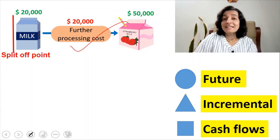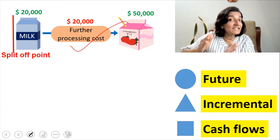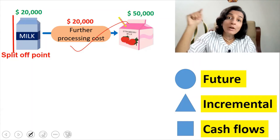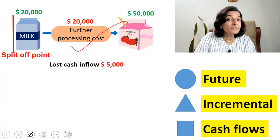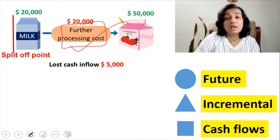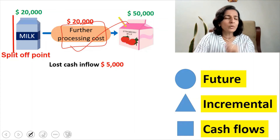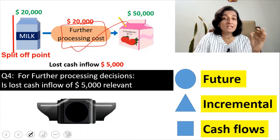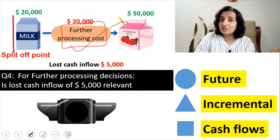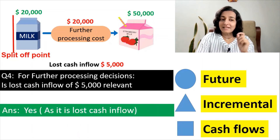Suppose the further processing is done in a section of the factory building. If you were not further processing, that section of the building could have been let out and you would have received $5,000 as rental income. But because of the decision to further process, you will be losing out on that rental income — a lost cash inflow. The question is: for further processing decisions, is the lost cash inflow of $5,000 relevant? It's the green light — yes, it should be included as it is a lost cash inflow.